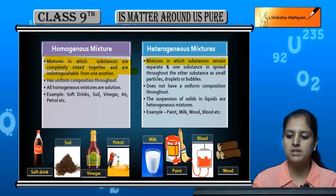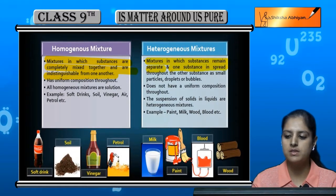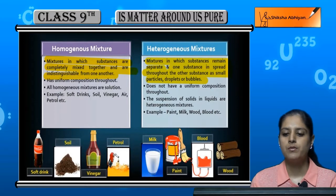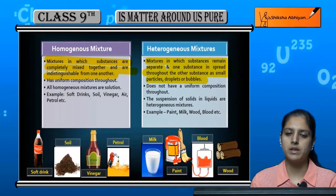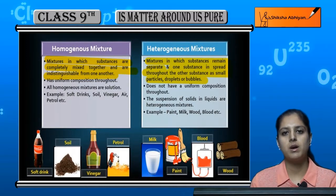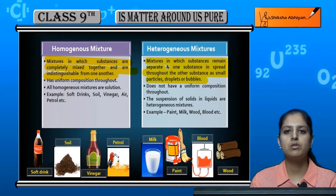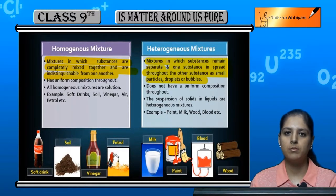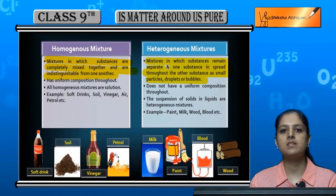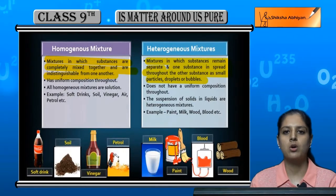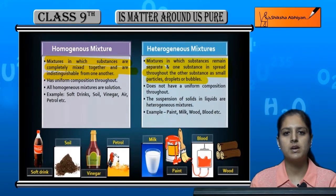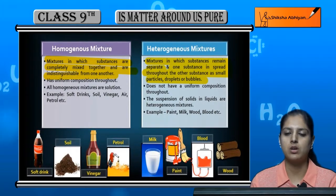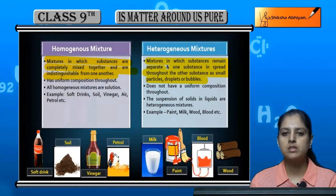In heterogeneous mixtures, substances remain separate — they stay distinct — and one substance is spread throughout the other as small particles, droplets, or bubbles. For example, if you dissolve chalk powder in water, the chalk particles remain undissolved because chalk cannot dissolve in water. If you look at that solution, you can easily distinguish that yes, this is water and chalk has been added — you can separately identify what it is made of. The solid chalk particles remain suspended in the water, so we can distinguish them. This is the basic difference.